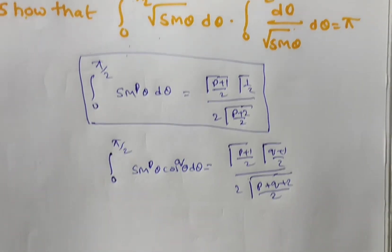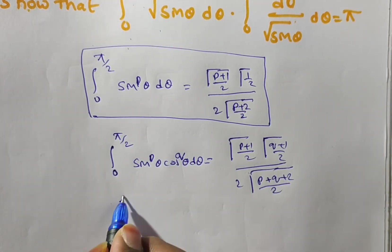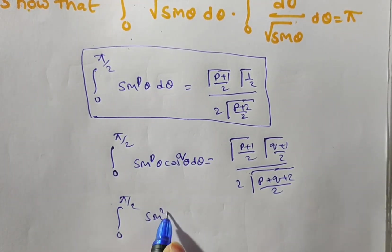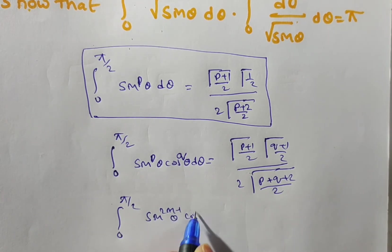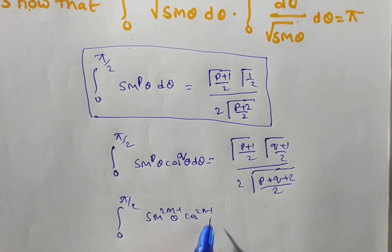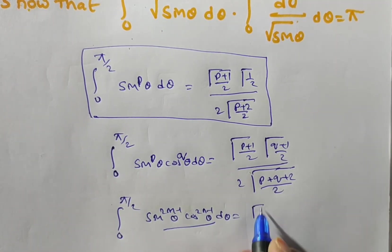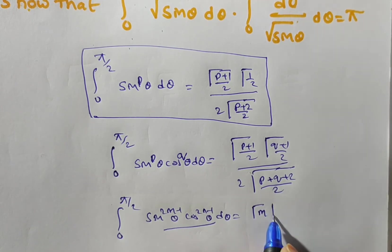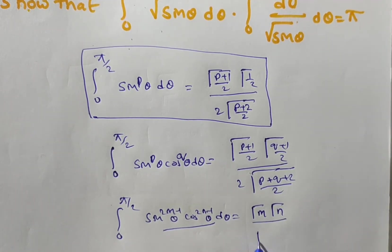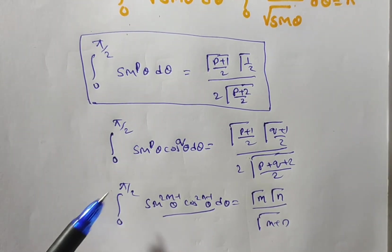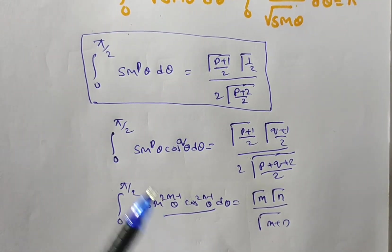This formula is also written as: integral from 0 to π/2 of sin^(2m−1)(θ) cos^(2n−1)(θ) dθ equals γ(m)·γ(n) / γ(m+n), using the relation between beta and gamma. Here, 2m−1 = p.